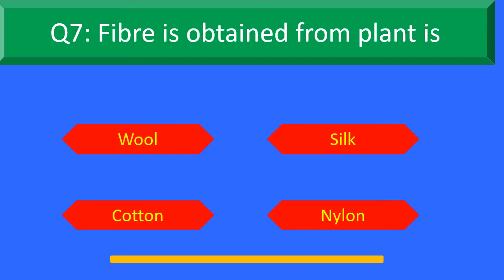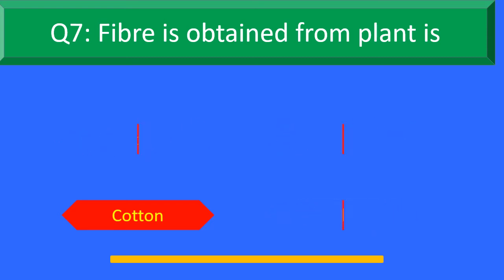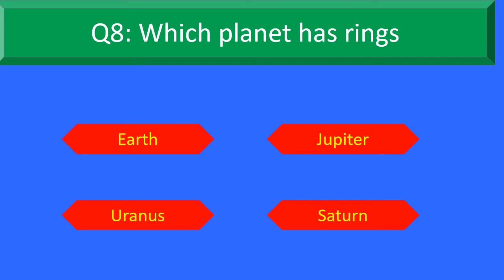The right answer is Option C: Mouth. Fibre is obtained from the plant — cotton. Moving to question number 8.